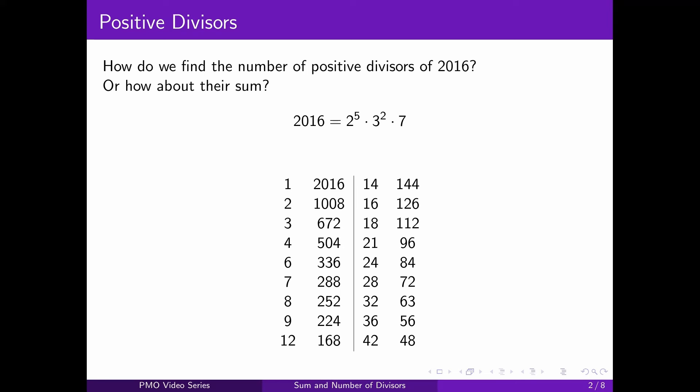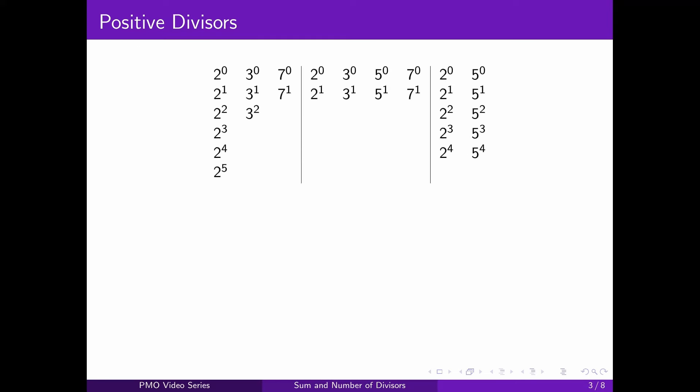This is nice — you can easily get the number by counting, but it's a bit tedious and it doesn't tell us anything about the sum unless you want to add up all these numbers, which is also very tedious. So instead we'll be trying another kind of representation, which is based on the prime factorization, slightly modified.